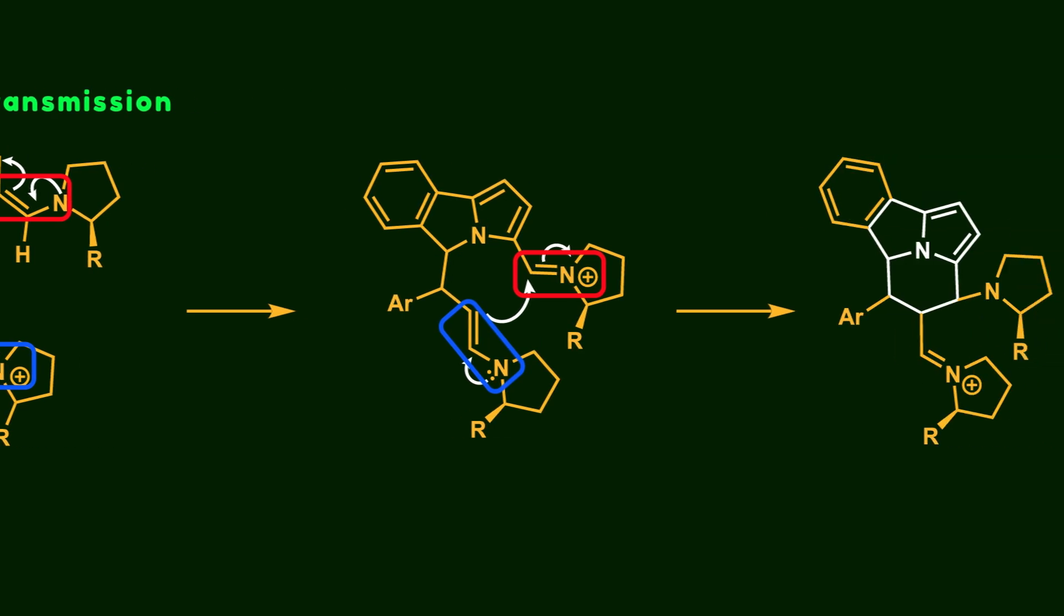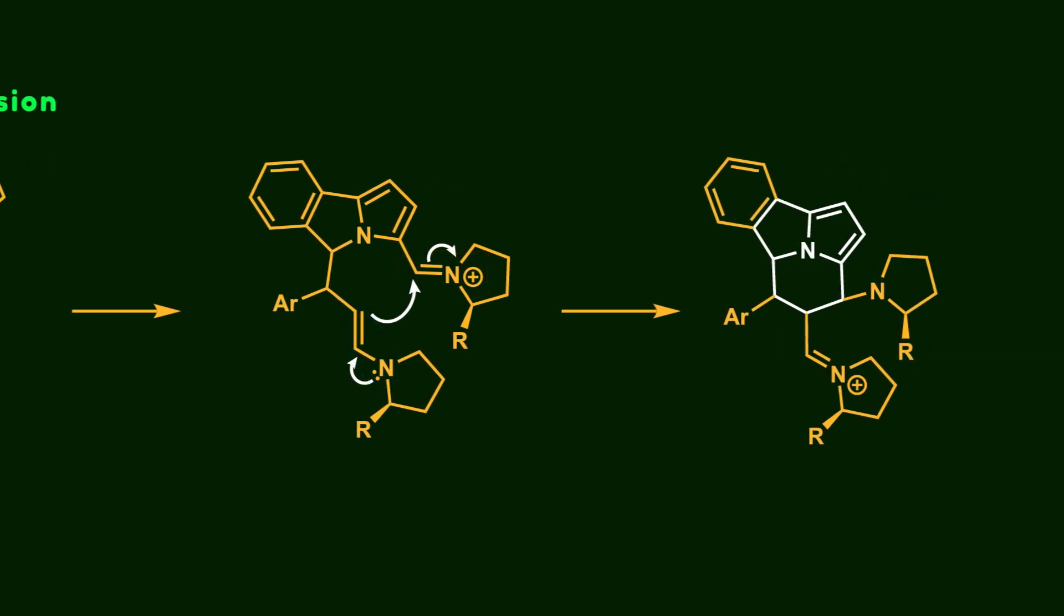As a result, the newly formed enamine triggers the nucleophilic attack of the 2π component onto the iminium ion, facilitating ring closure and yielding the cyclized product.